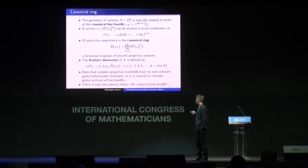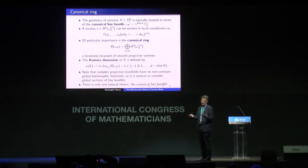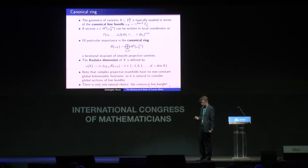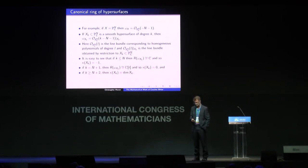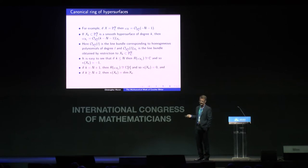Why do we want to consider sections of our line bundle? Typically if you study some geometric object, you need functions on it, and if you just consider holomorphic functions, since our varieties are projective they're compact, and the only global holomorphic functions are constant, so those are not very interesting. You have to consider meromorphic functions or sections of some line bundle, and there are not many naturally available line bundles. The only real choice is the canonical line bundle. The easiest example is complex projective space itself, in which case the canonical line bundle corresponds to homogeneous polynomials of degree minus n minus one, so it will not have any interesting global sections.